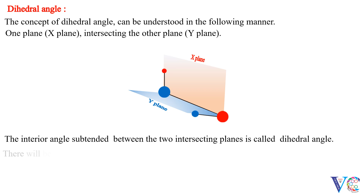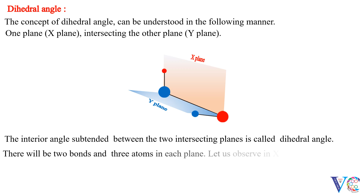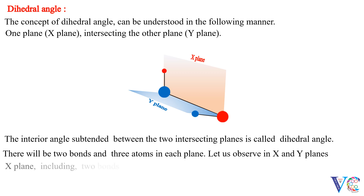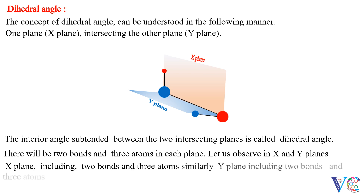There will be two bonds and three atoms in each plane. Let us observe in the X and Y planes. The X-plane includes two bonds and three atoms. Similarly, the Y-plane includes two bonds and three atoms.